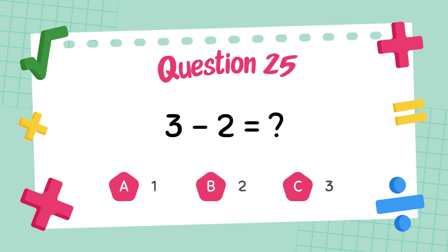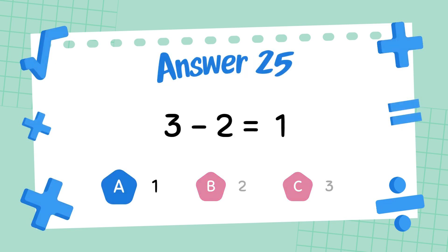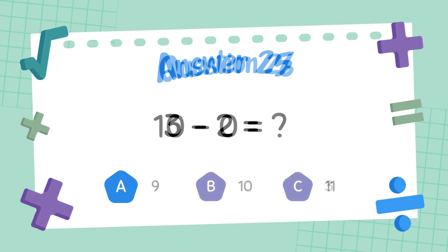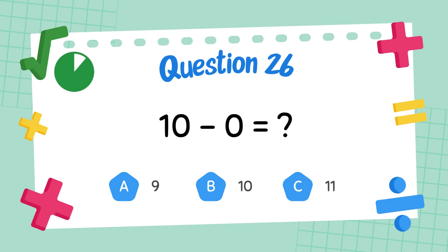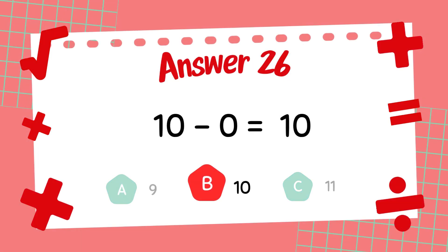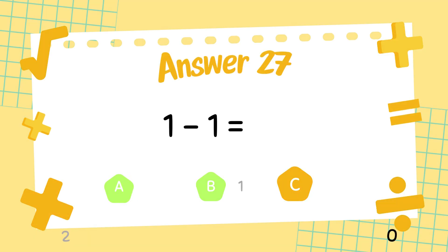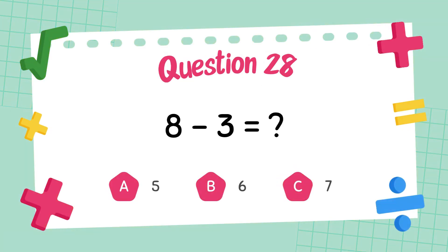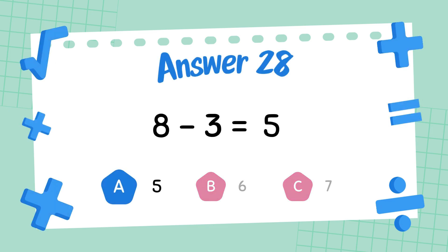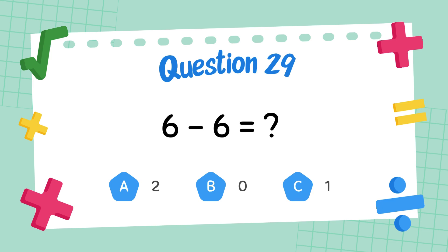What is 3 minus 2? The answer is 1. What is 10 minus 0? The answer is 10. The answer is 5. What is 8 minus 3? The answer is 5. What is 6 minus 3?